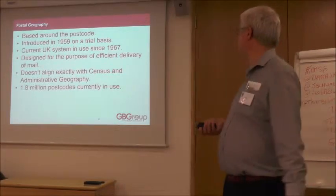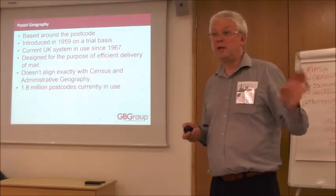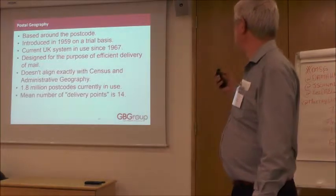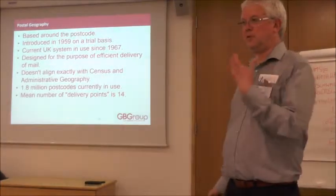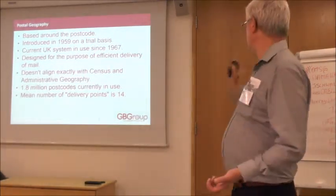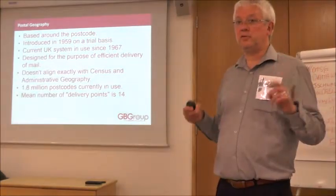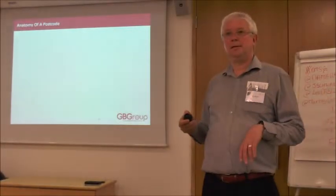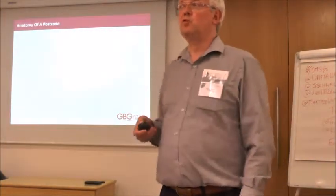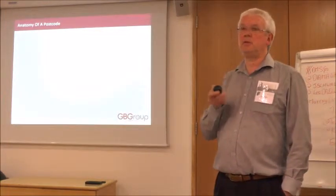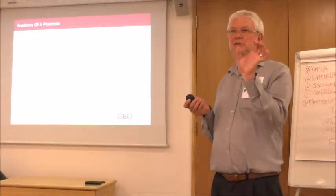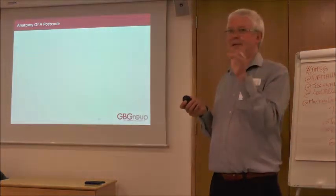There are currently 1.8 million postcodes in use, but the ONS PD has retired ones too, so if you've got old data you want to match, you can still match it. Royal Mail refers to addresses as delivery points — they might be businesses or houses. The mean number of delivery points in a postcode is 14. The postcode system was first trialled in Norwich and Croydon. If anyone wonders why the main Croydon postcode is CR0, it's because when they first started they used three-letter acronyms — CRO for Croydon — but changed it to CR0.